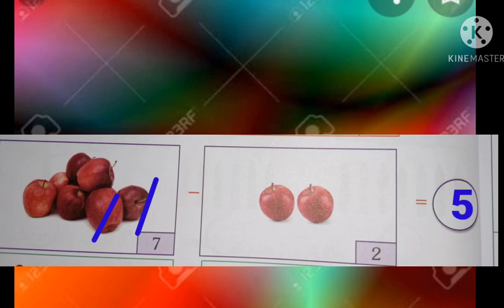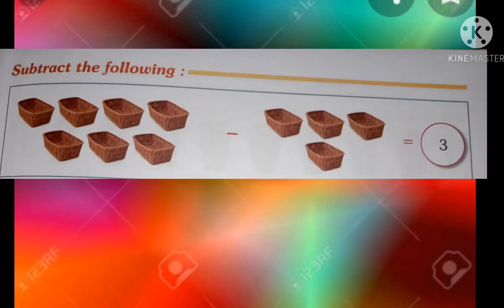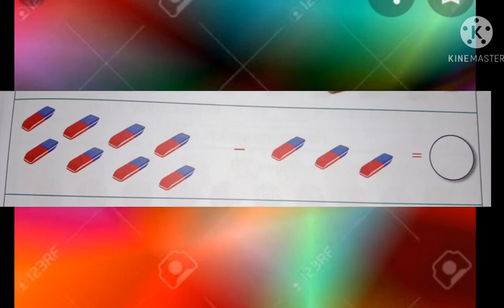Next problem: 7 minus — count: 1, 2, 3, 4, 5, 6, 7, 8. That is 8. 8 minus 3. Count what remains: 1, 2, 3, 3. The answer is 5.